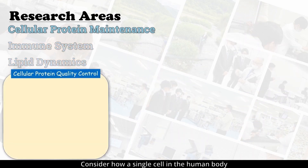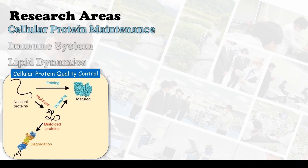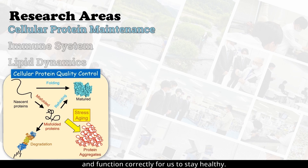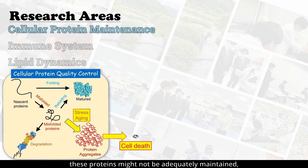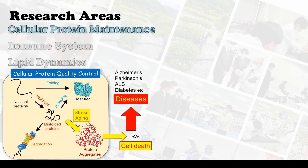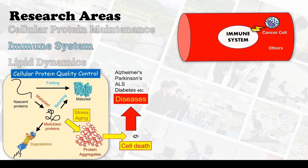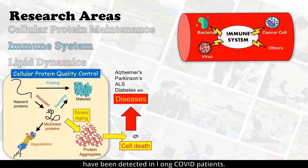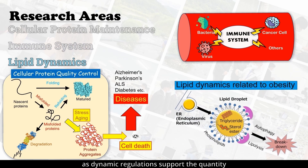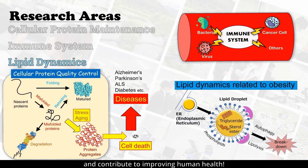Consider how a single cell in the human body contains tens of thousands of different proteins. These proteins must be appropriately maintained and function correctly for us to stay healthy. However, when we don't live a healthy lifestyle, these proteins might not be adequately maintained, causing various diseases. The immune system can detect and destroy pathogens such as bacteria and viruses to maintain health. In healthy individuals, it also targets abnormal cancer cells. Abnormalities of the immune system have been detected in long COVID patients. Lipid dynamics are also important for our health, as dynamic regulations support the quantity and quality of lipids in our cells. We invite you to help us understand how our cells and cellular proteins work and contribute to improving human health.